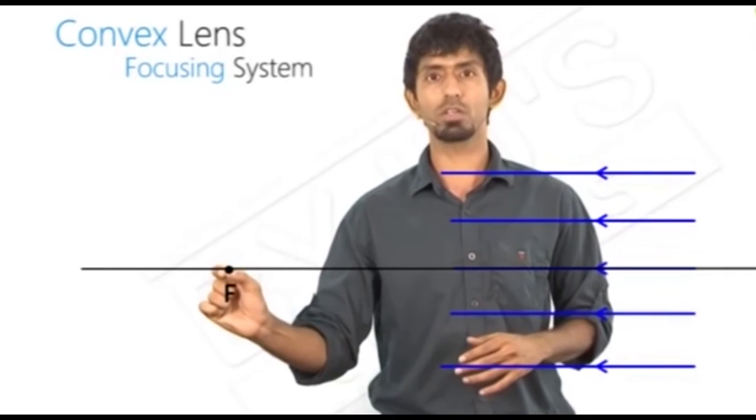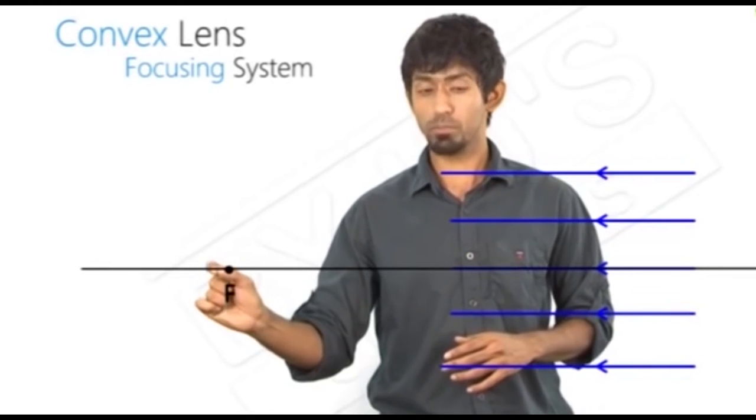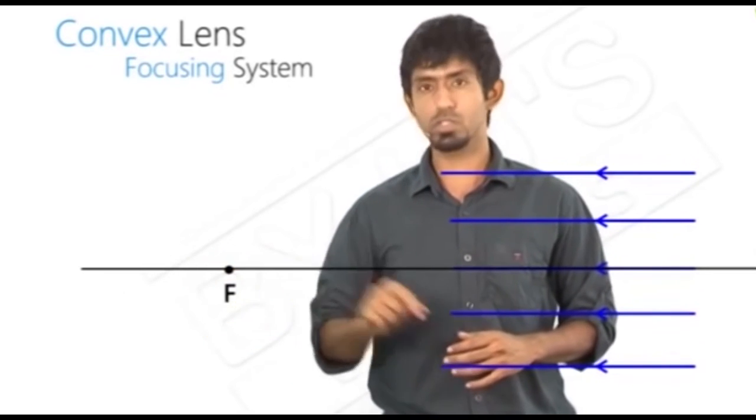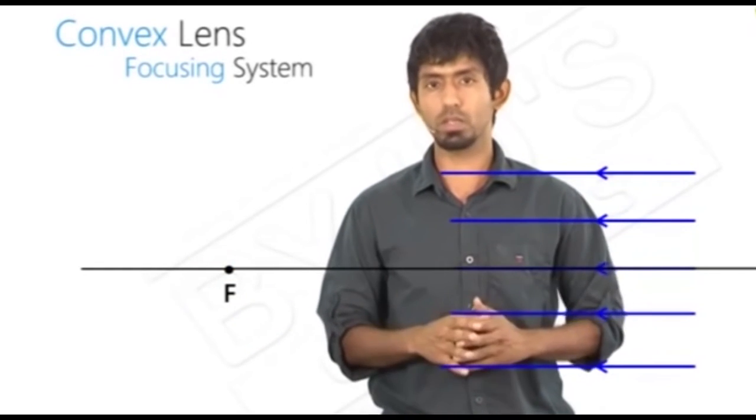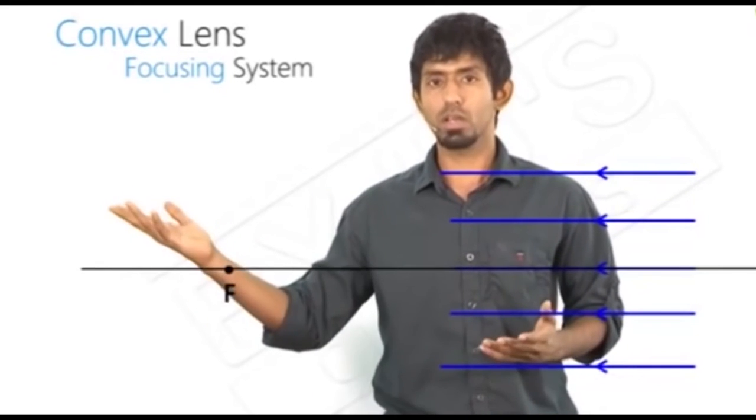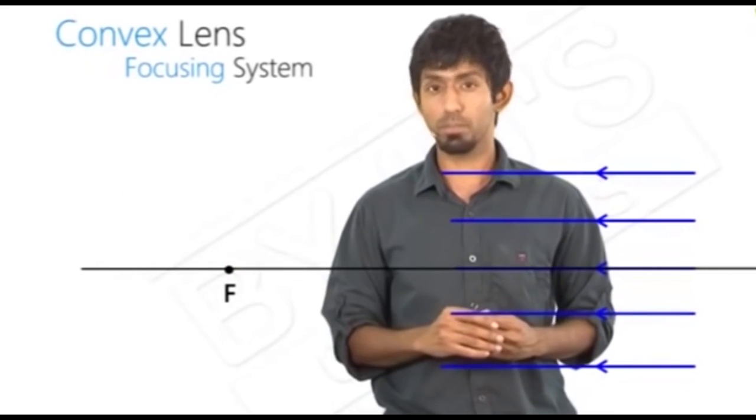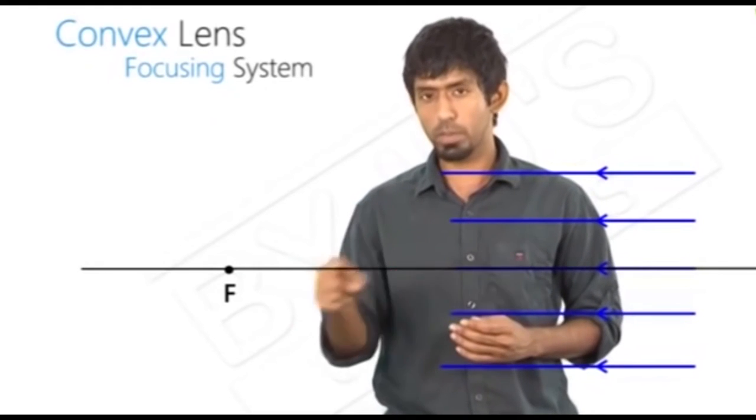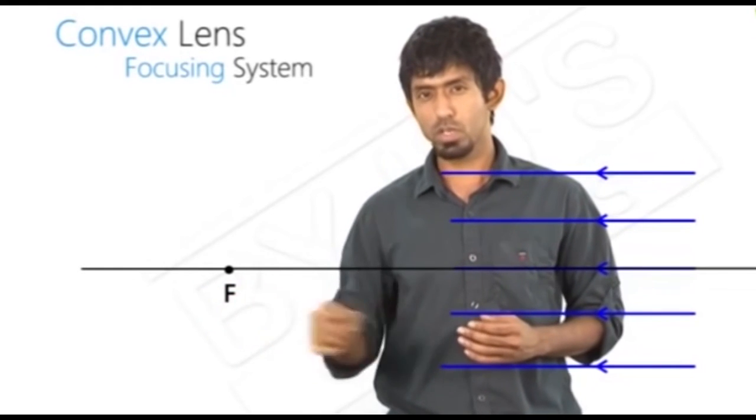And I want to focus them all onto a point over here. Now I know that the ray over here has to travel a long distance to meet here, right? If I don't do anything, will it go meet there? It's going to continue straight, right? I need to make it go towards it. The other ray over here, I need to make it go towards here. I need to do this. So what do I start to do?